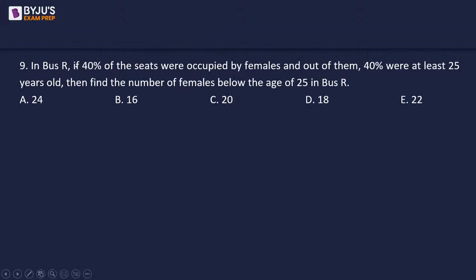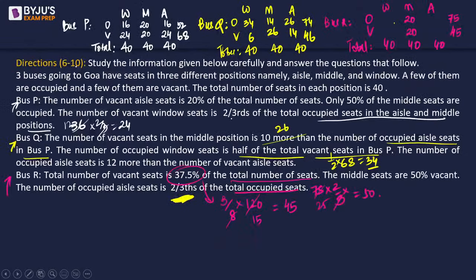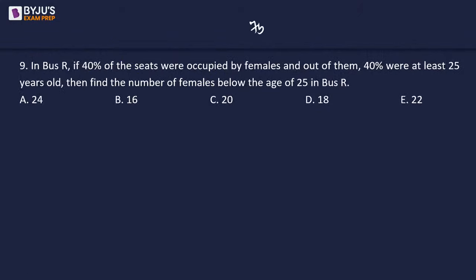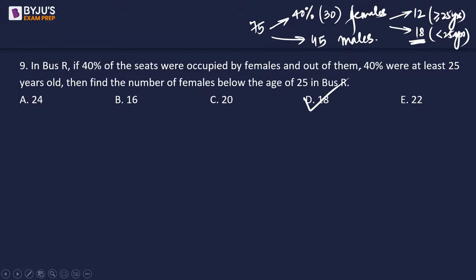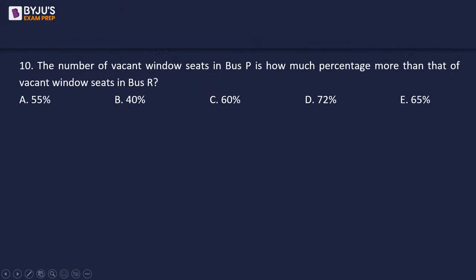If 40% of seats in Bus R were occupied by females: total occupied in Bus R = 75, so females = 40% × 75 = 30. Remaining 45 are males. Of these 30 females, 40% are at least 25 years old, meaning 12 are 25 or above, so the remaining 18 are below 25 years. The number of females below age 25 in Bus R is 18.